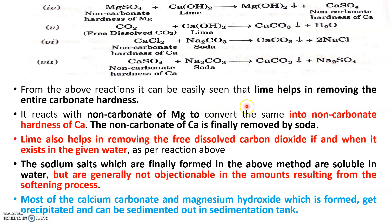When you add lime, it removes entirely the carbonate hardness itself. The reactions with non-carbonate of magnesium convert it into non-carbonate of calcium, and this non-carbonate of calcium can then be removed by soda itself, as you can see with respect to the above reactions.